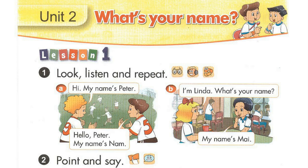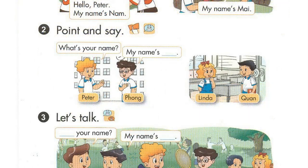B. I'm Linda. What's your name? My name's Mai. Activity 2. Point and say. What's your name? My name's Bong.